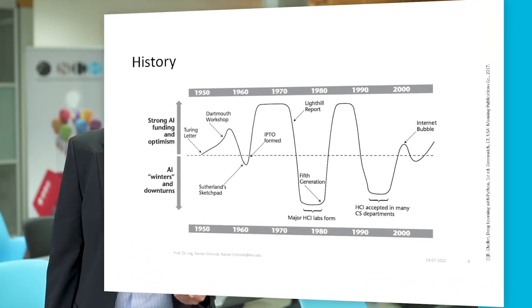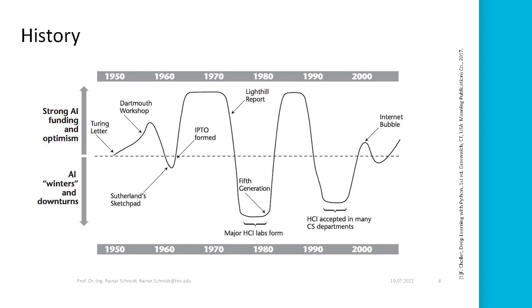Let's have a look at the history of artificial intelligence — there have been many ups and downs. The first ideas about artificial intelligence started in the 1950s. There was a letter by Alan Turing where he envisioned something that would be called artificial intelligence today. Interest then increased as computers gained more traction in the 1950s and 1960s. There was the famous Dartmouth workshop where people started to develop a research program for artificial intelligence.